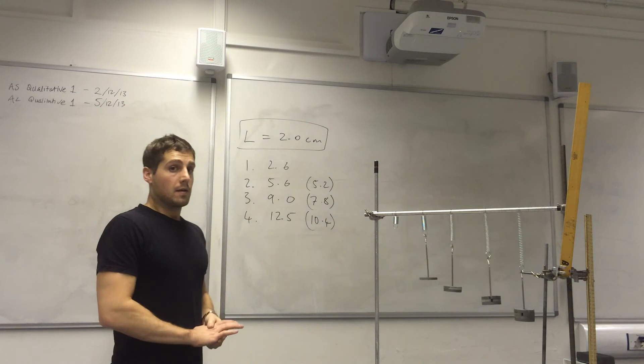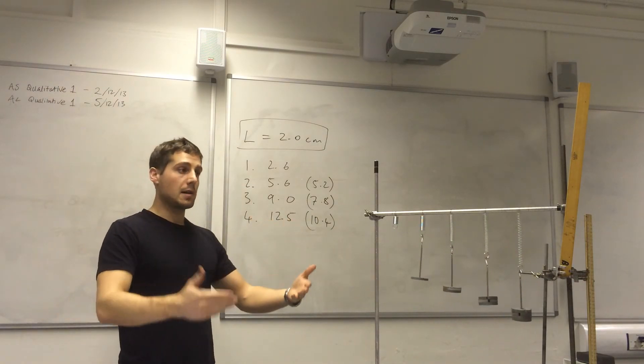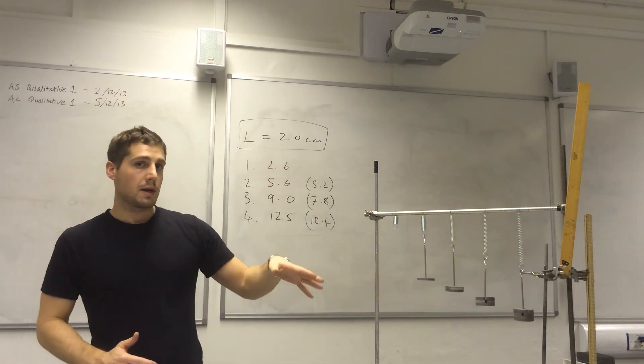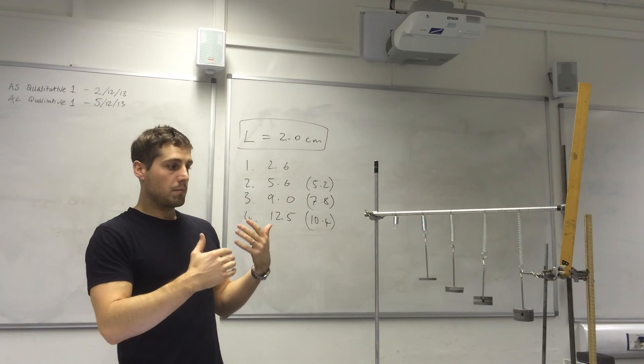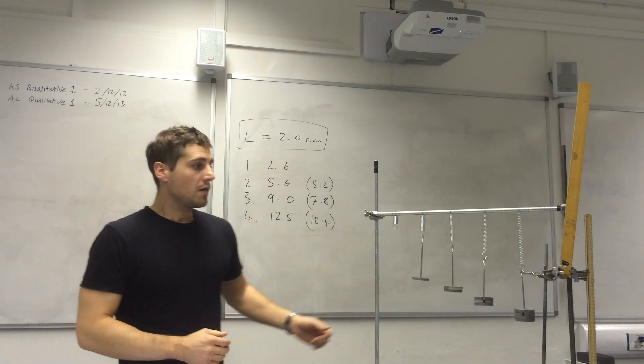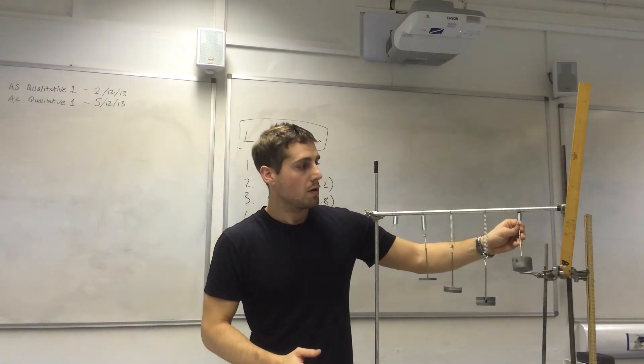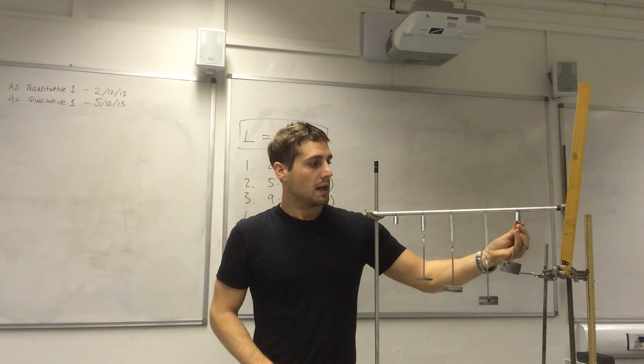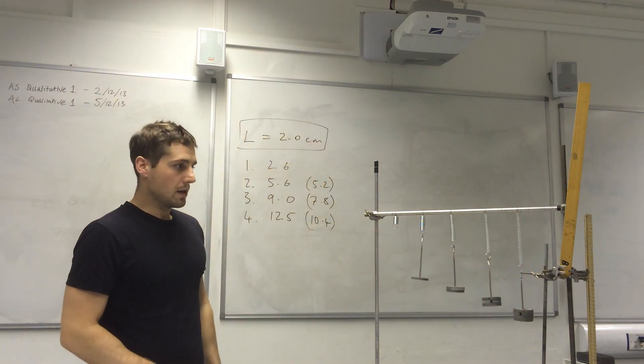Hooke's law says that force is proportional to the extension as long as we haven't reached the elastic limit. The loads here were not sufficient to take the spring beyond the elastic limit, and therefore I would expect that rule to be obeyed. But if I put significantly more load on there and take it beyond the elastic limit, you would know because the spring when I remove the load wouldn't go back to the original length. But the fact that it does means we haven't gone beyond the elastic limit. And therefore Hooke's law is still obeyed; if we went beyond the elastic limit it wouldn't be obeyed any longer.